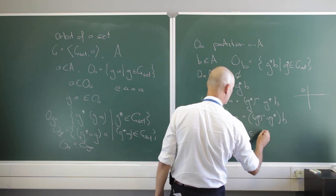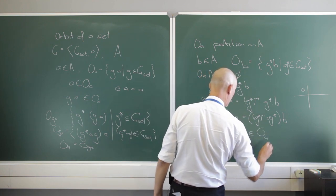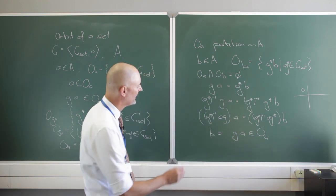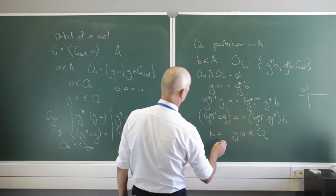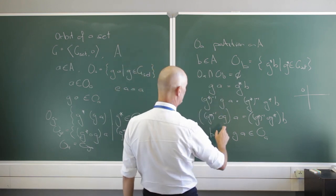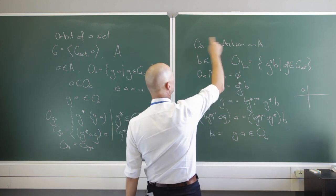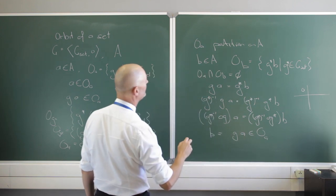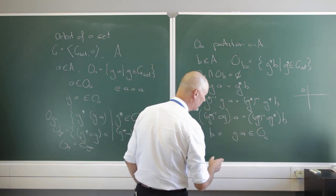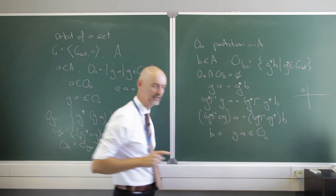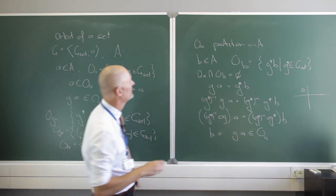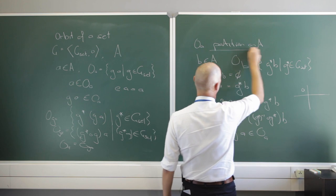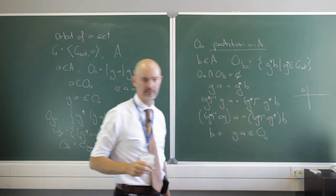So b is an element of the orbit of a. This means if we assumed the orbits were not disjoint, then b is actually originally part of the orbit of a. Therefore, if b is not in the orbit of a, the two orbits must be disjoint — clearly showing that each orbit is one of the partitions of the set A.